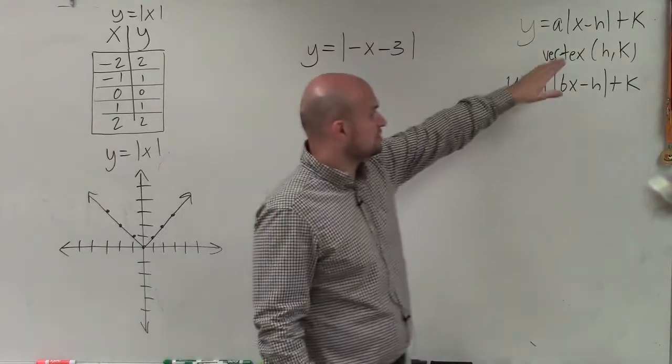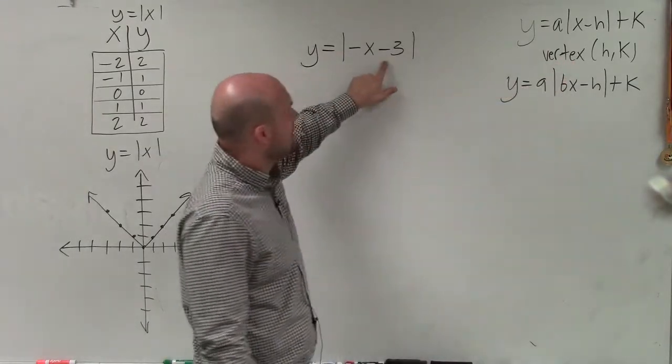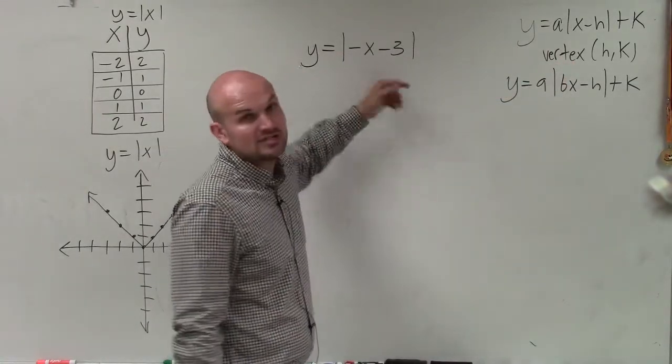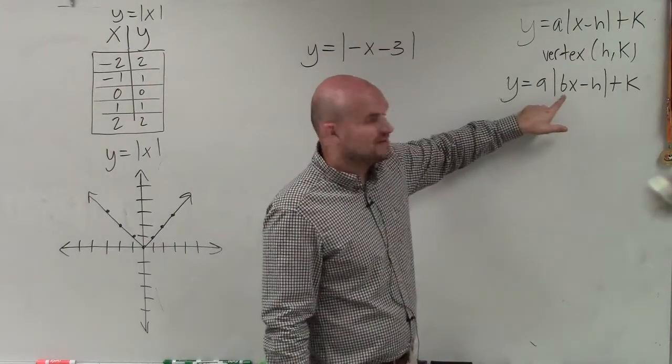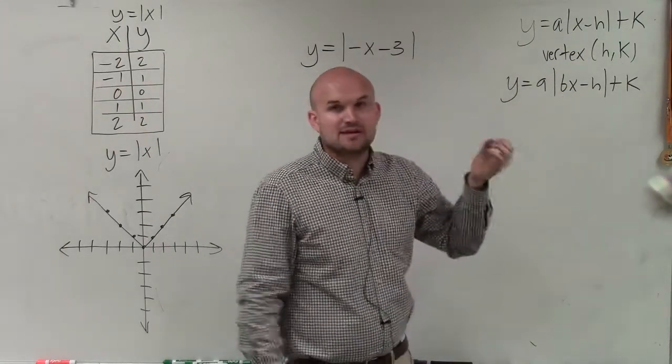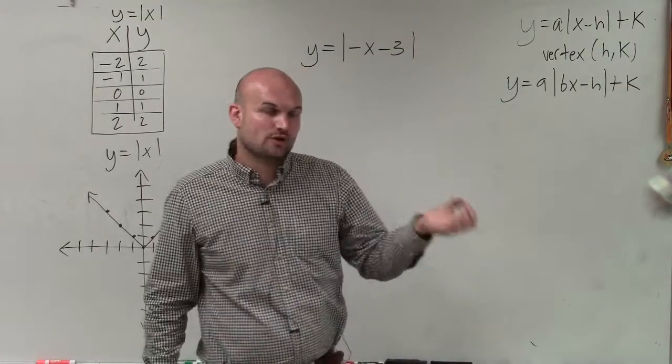And it's very common for students to just look at h and k and say, okay, I'm minusing 3, so that means my new vertex is at positive 3. But any time we have our x being multiplied by b, we have to make sure we solve for our x-coordinate of our vertex.